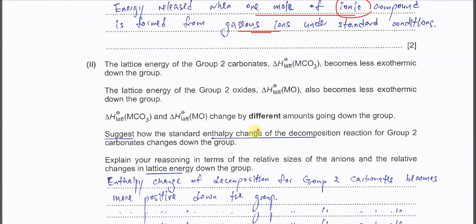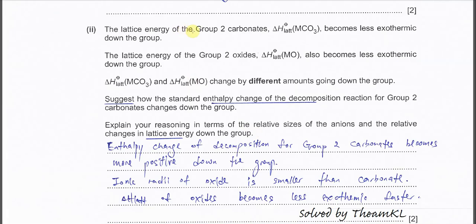Part B2: the lattice energy of Group 2 carbonates becomes less exothermic down the group, just because the cation size becomes larger, so the attractions become weaker and less energy is released. The lattice energies of Group 2 oxides also become less exothermic for the same reason — the cation is getting larger, so less energy is released.